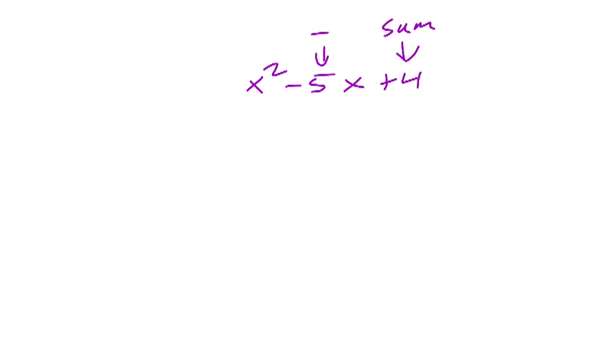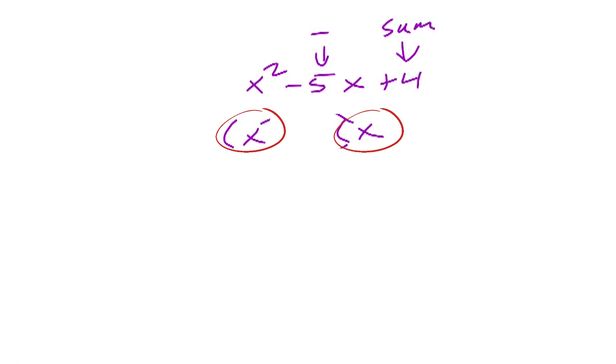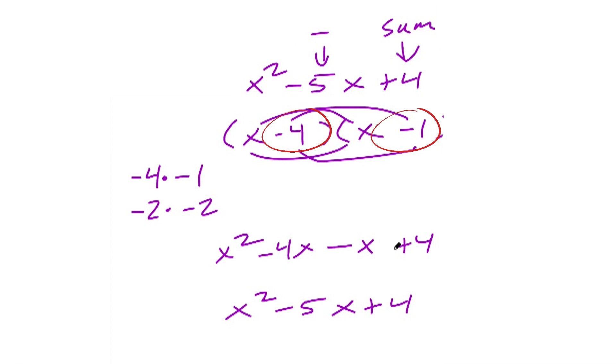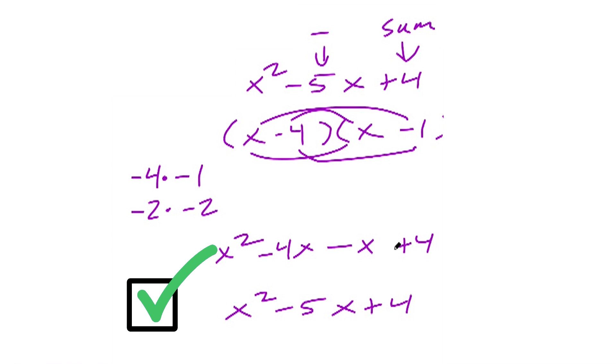In the next example, x² − 5x + 4, the last term is a positive 4, so we're again looking for a sum of factors. But the middle term is negative, meaning both factors must be negative. The negative factor pairs of 4 are (−4, −1) and (−2, −2). Only one pair adds to give −5, which is −4 and −1. I fill those in as my two factors in factored form, then multiply it out to verify the factoring is correct.